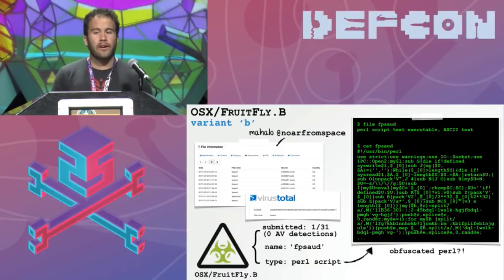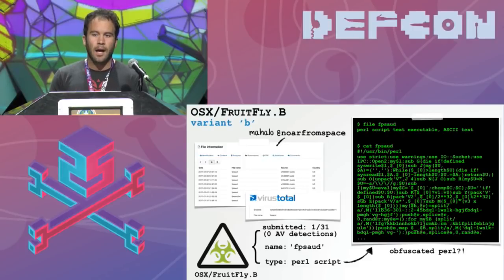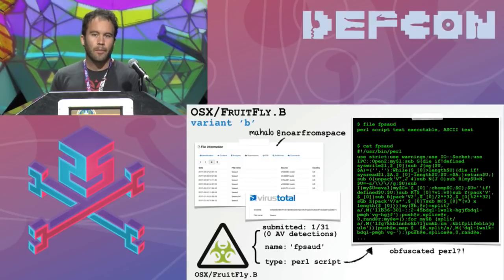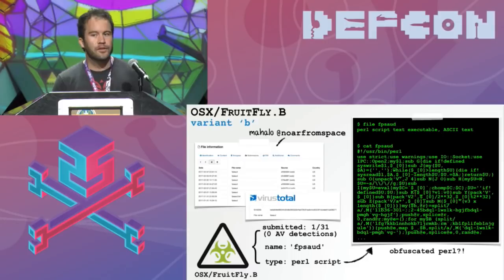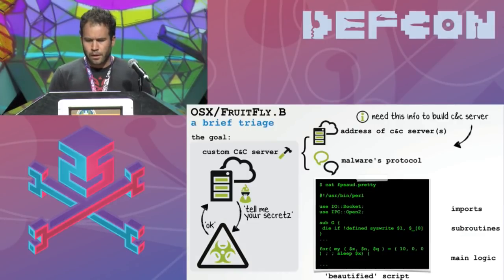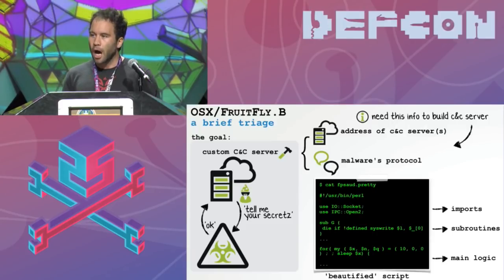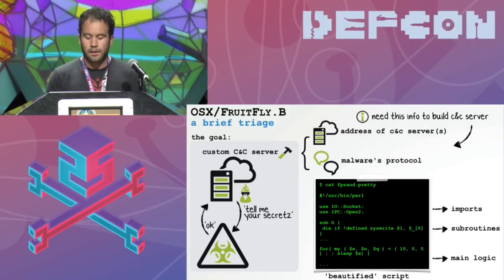Today we're going to be looking at variant B. A friend sent me a hash of this sometime in late January. At the time variant A was already being detected but variant B was still undetected. It was submitted to VirusTotal with the name FPSOdd, designed to mimic a common Flash Player. Like variant A, its main component was an obfuscated Perl script. We want to build a custom command and control server but we need the address the malware tries to connect to and we also need to understand its protocol, so let's briefly triage this malicious script.